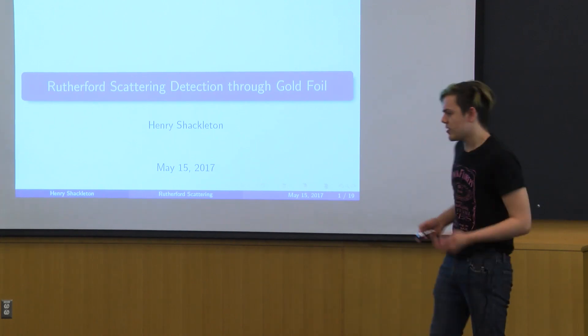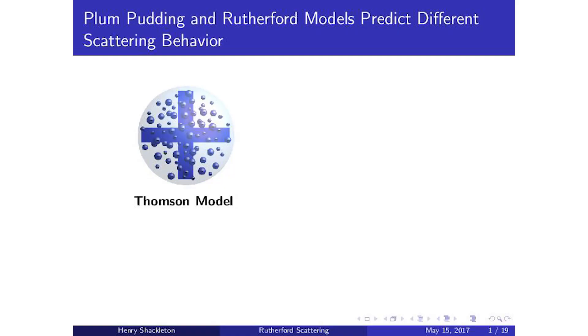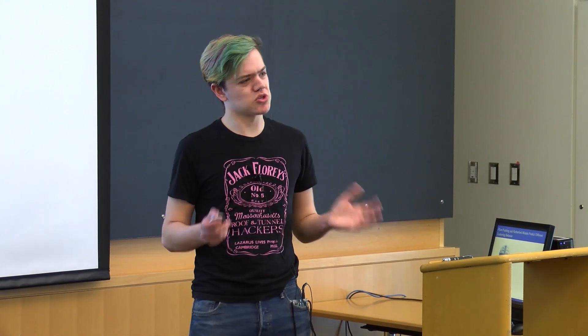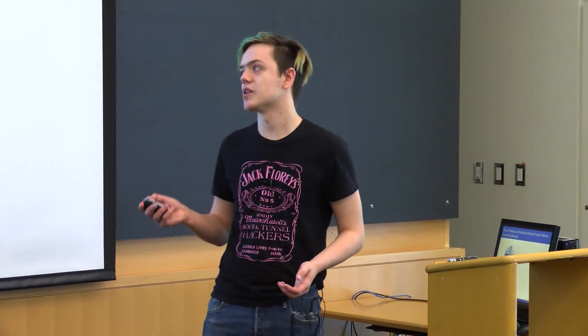To give a bit of background, I'm going to go through two different historical models of the atom and talk about the different experimental predictions that they predict. Back in the early 19th century, people weren't too sure what made up an atom. They knew there were some electrons and some positive stuff going around somewhere, but other than that they weren't too sure. The predominant theory at the time was J.J. Thomson's plum pudding model, shown here.